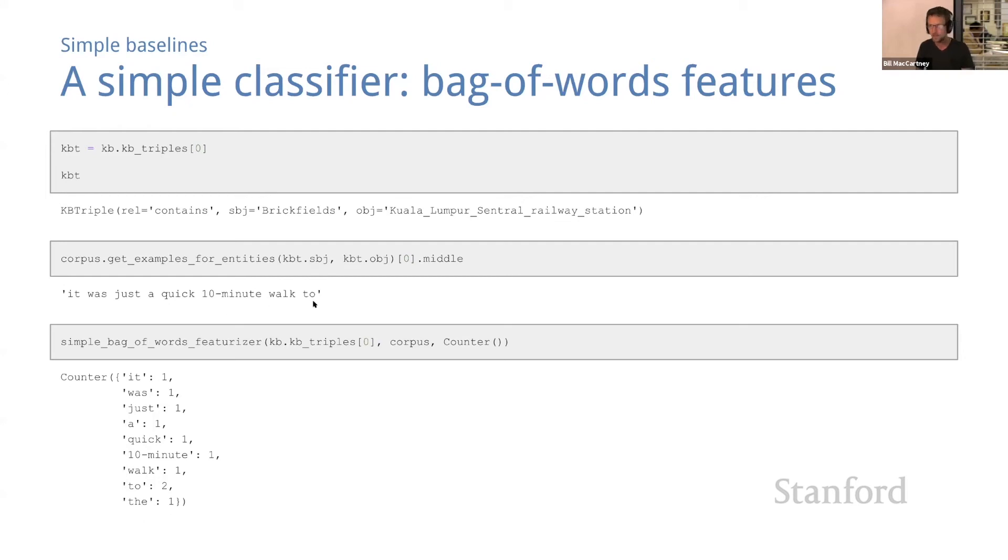So where did those come from? Well, remember that the featurizer counts words from the middles of all examples containing those entities in either direction. And it turns out that the corpus contains another example containing those two entities. There's just one other example, but that other example has middle 'to the.' And so that's where these counts come from. So all is well—it did the right thing.